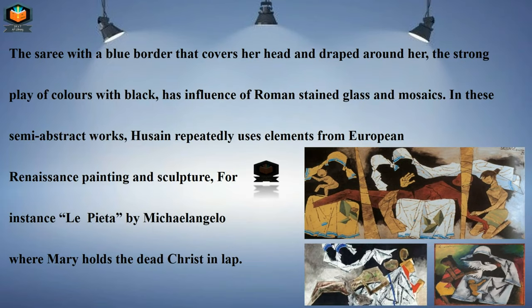The sari has a blue border that covers her head and drapes around her. The strong play of colors with black has the influence of Roman stained glass and mosaics. In these semi-architectural works, Hussain repeatedly uses elements from European Renaissance painting and sculpture. For instance, La Pietà by Michelangelo, where Mary holds the dead Christ in her lap.